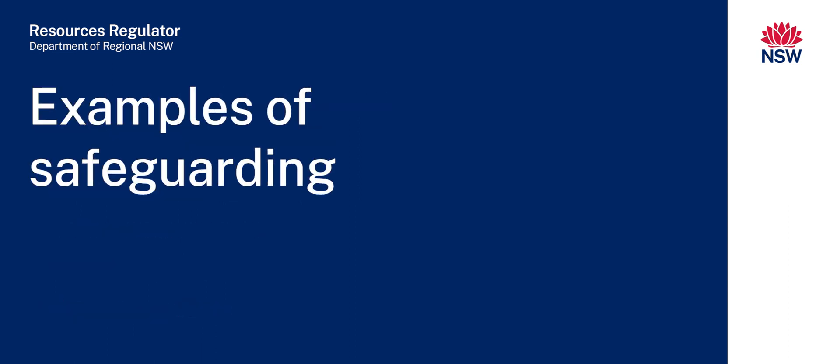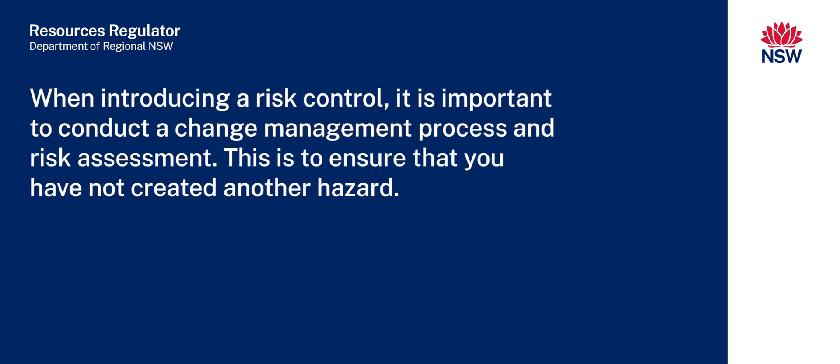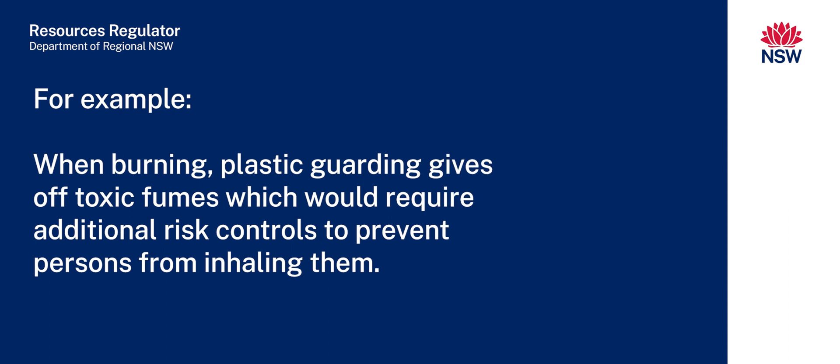Examples of safeguarding. When introducing a risk control, it is important to conduct a change management process and risk assessment. This is to ensure you have not created another hazard. For example, when burning, plastic guarding gives off toxic fumes, which would require additional risk controls to prevent persons from inhaling them.